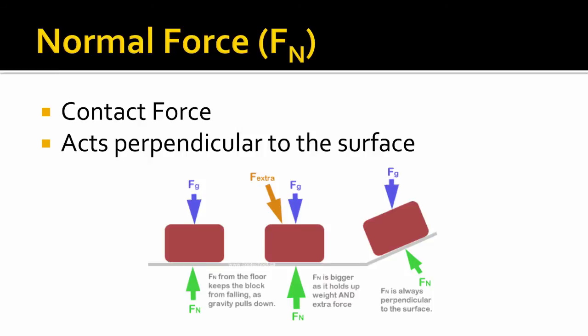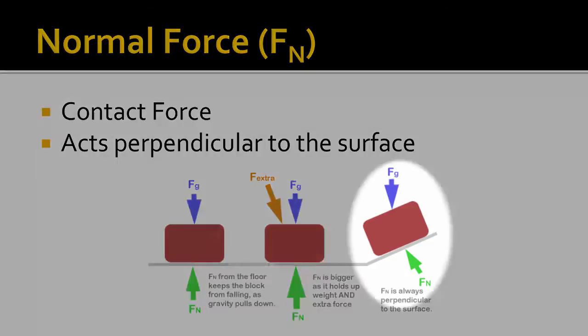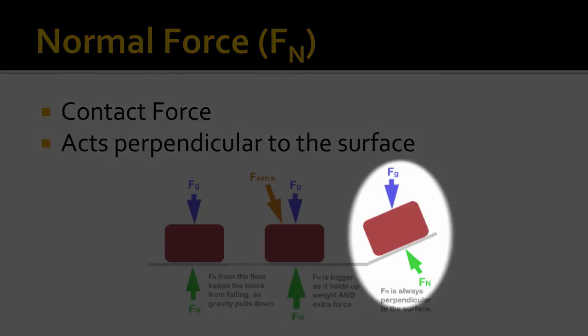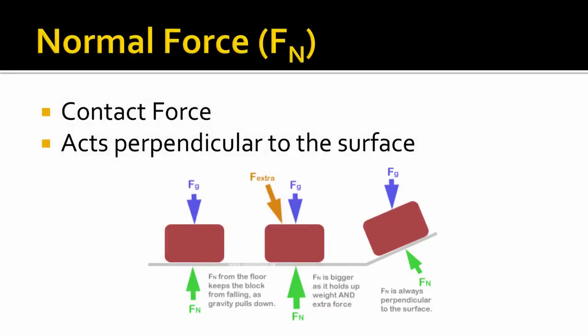Now if you have something on a slant, such as we have over here, you have the force of gravity still acting straight down. That doesn't change no matter if you're on a hill or on a flat. But the normal force always acts perpendicular to the surface. So now the normal force does not act exactly opposite gravity. It always acts perpendicular to the surface. And we'll see more how to deal with inclined planes later.